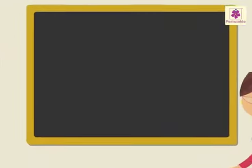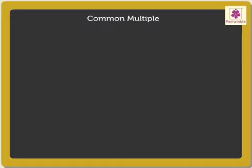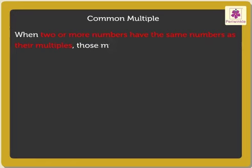Let us understand the meaning of the term common multiple. When two or more numbers have the same numbers as their multiples, those multiples are said to be common multiples.